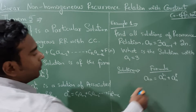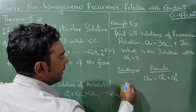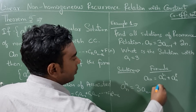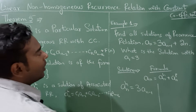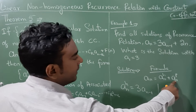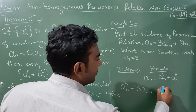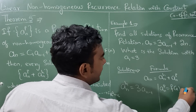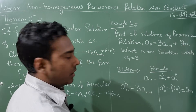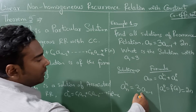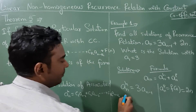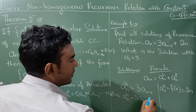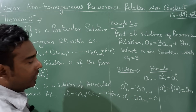Now, the homogeneous part aₙʰ can be written as 3aₙ₋₁. The particular part f(n) is 2n, taken from the original equation. Taking this to the left hand side: aₙʰ − 3aₙ₋₁ = 0. This is degree 1.